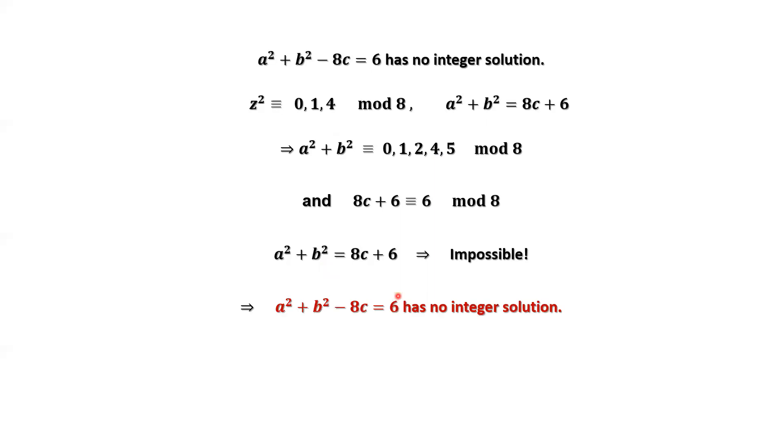Therefore, we claim a squared plus b squared minus 8c equals 6 has no integer solution. That's all. Thanks for watching, and I'll see you next time.